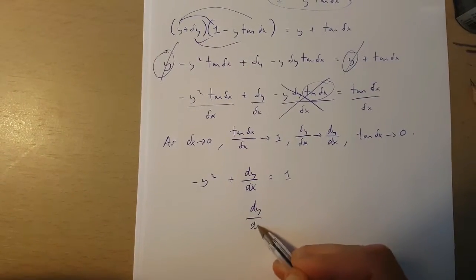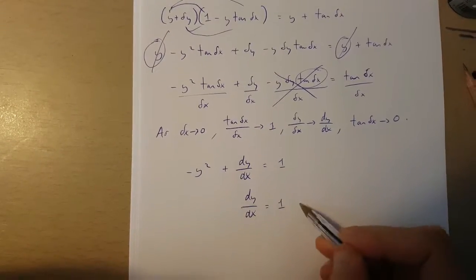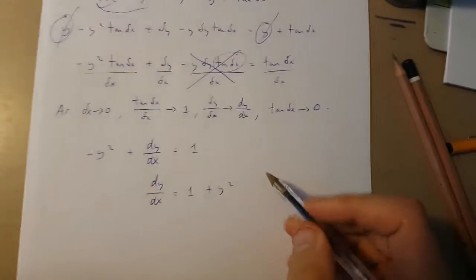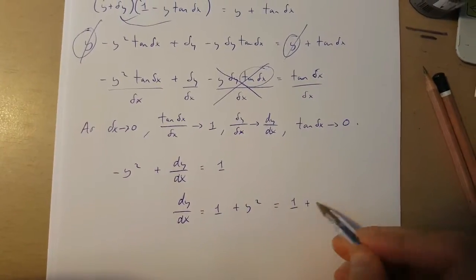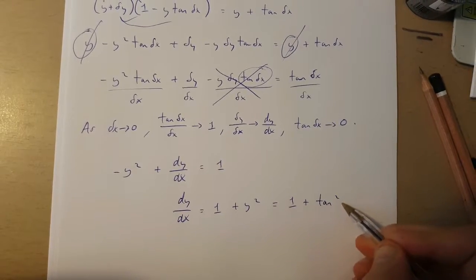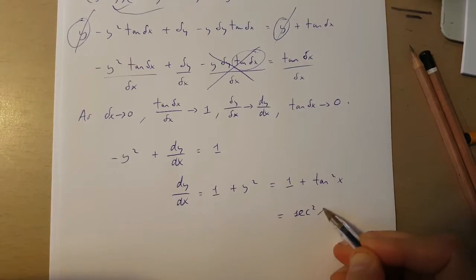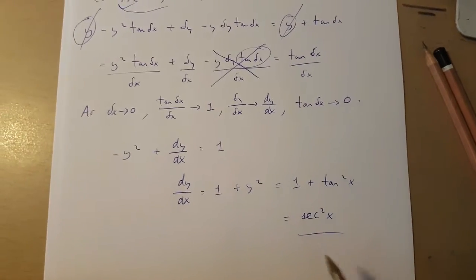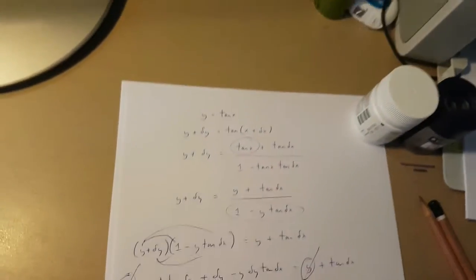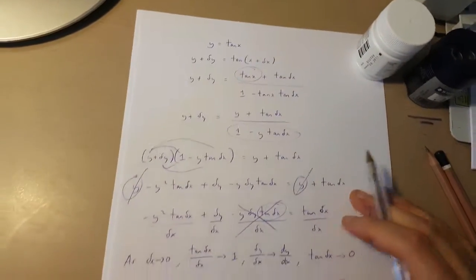And this means that dy over dx is 1 plus y squared, which is 1 plus tan x squared, which is sec x squared. And this is tan x differentiated.